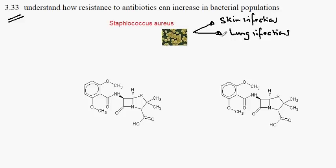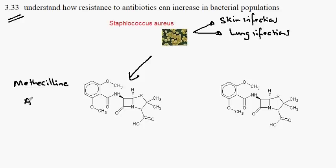Those infected with Staphylococcus aureus can be treated with this drug here, called Methicillin. This is a type of antibiotic, and this chemical will actually kill the Staphylococcus aureus.